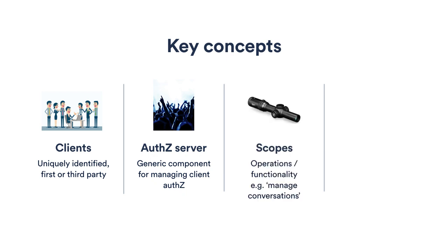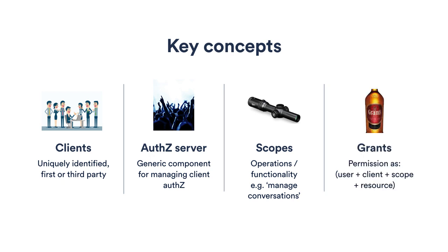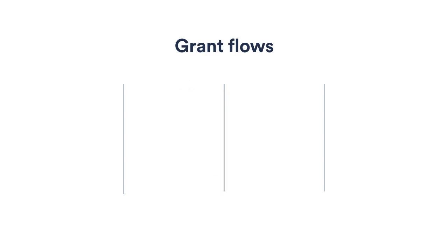Next are scopes. Scopes represent permission strings that define what operations a client can do — so maybe clients can manage conversations, create issues, and so forth. Then there are grants, which tie all these things together. Think of grants as like a permission rule that links the user, the client that they're using, the scopes that are authorized, and the resource to which the actions or scopes are allowed on. OAuth is really all about generating and storing these grants and generating tokens based on them, and hence they define various what are called grant flows.